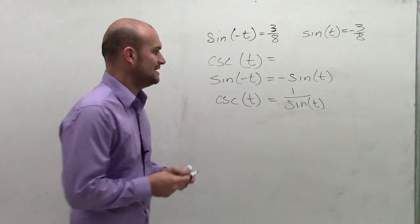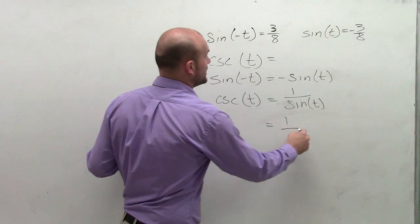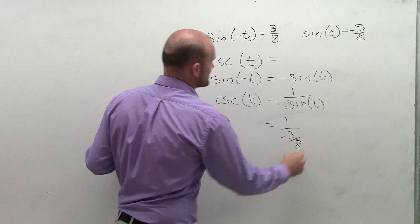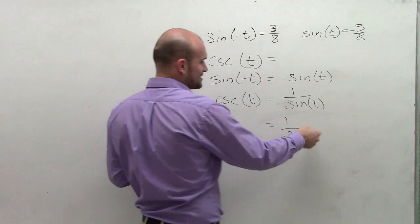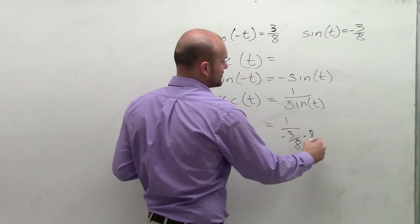Now, if I have cosecant of t equals 1 over negative 3/8, to figure out the rest of this, I just invert it, multiply by the reciprocal, or you could just say flip it over.